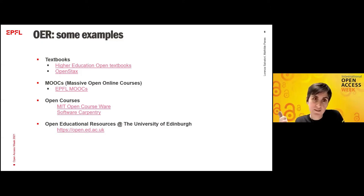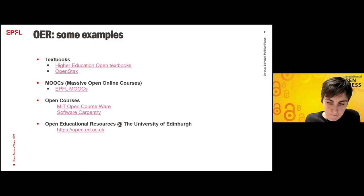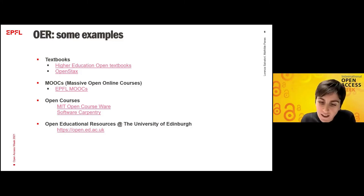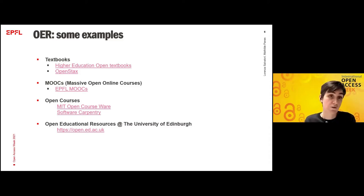Staying on open courses, there are two other interesting examples. There is Software Carpentry, which Mathilde will talk about later, and MIT OpenCourseWare. On the MIT website, they are very clear on their objective: the idea is simple — to publish all course materials online and make them widely available to everyone. In this courseware you can find more than 2,500 courses, each with a syllabus, video lectures, readings, assignments, exams, results and insights from the instructor. You can access and reuse them for free.